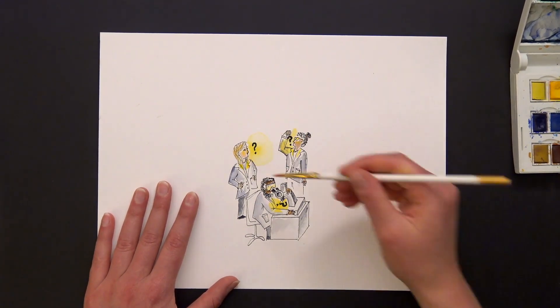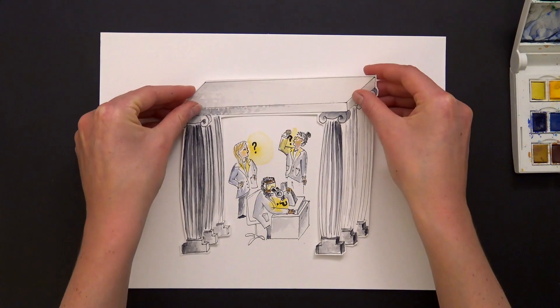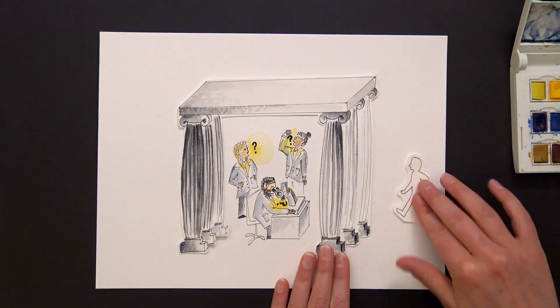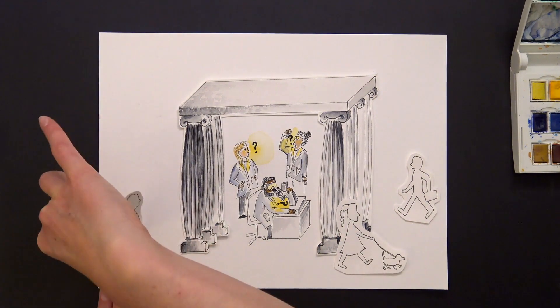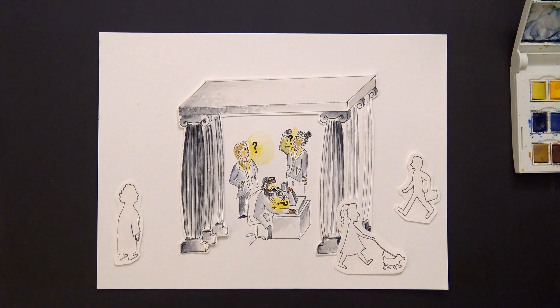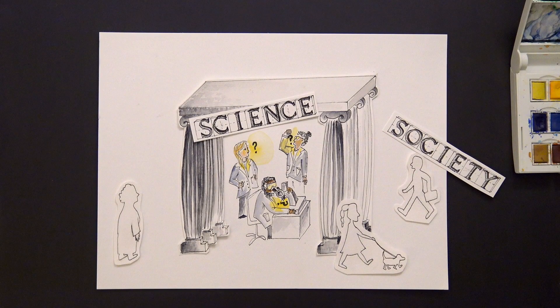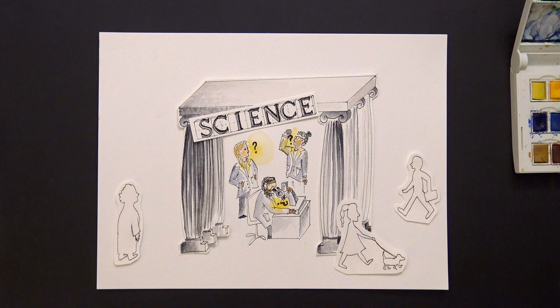This idea that scientific independence is essential to the process of innovation drives many scientists, funders, and leaders within and outside of science to safeguard intellectual freedoms. But a side effect of this approach can be a form of separation of science from society, which may hinder the ability of science to address some of society's most urgent and complex challenges.